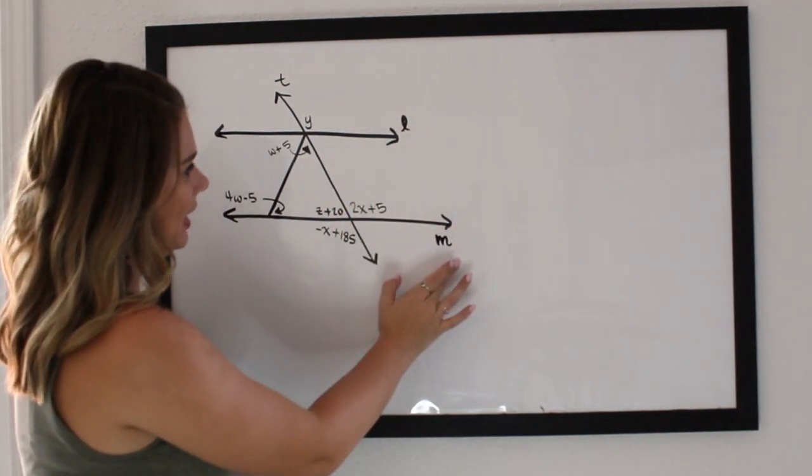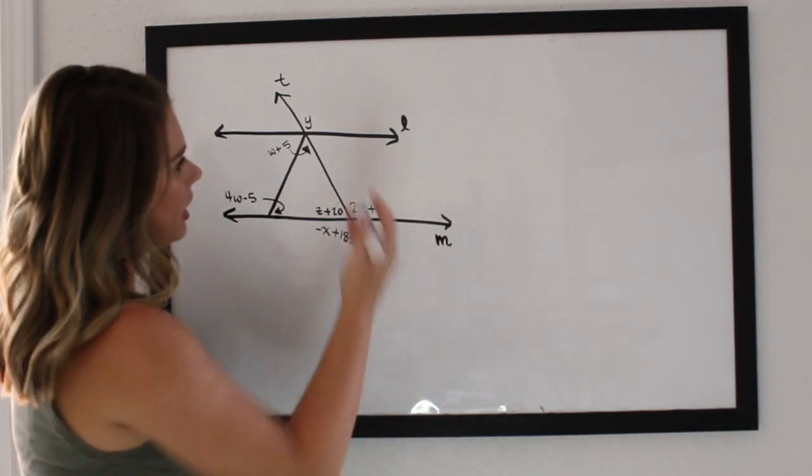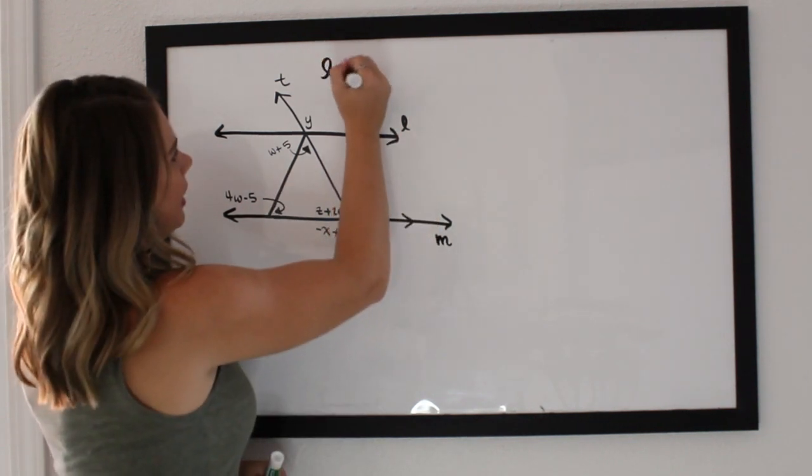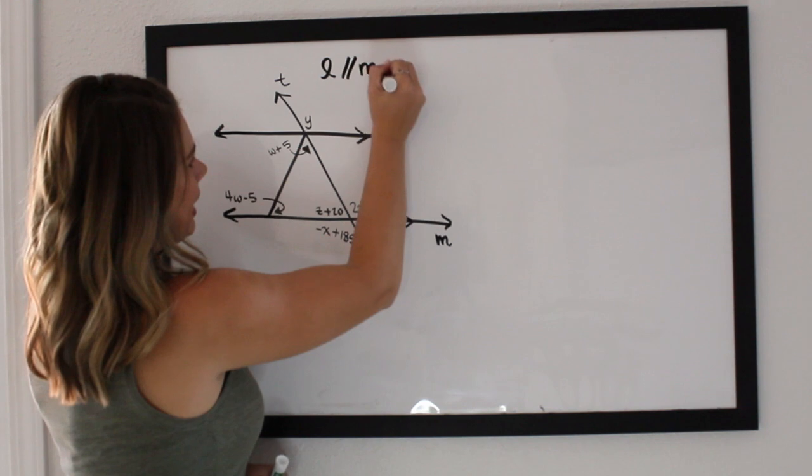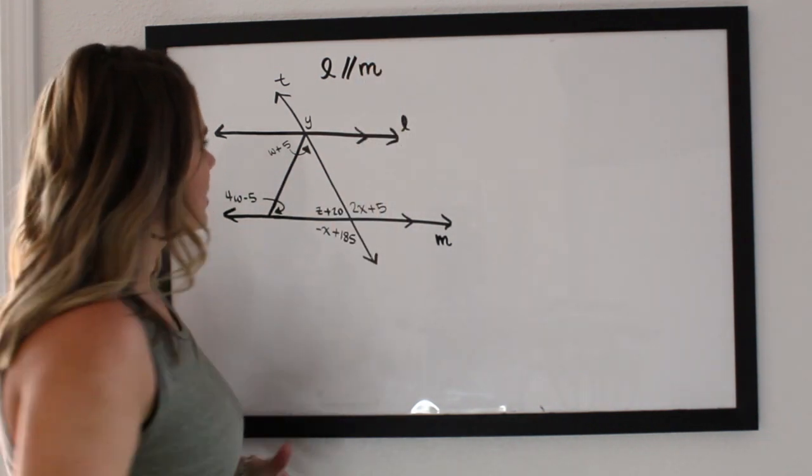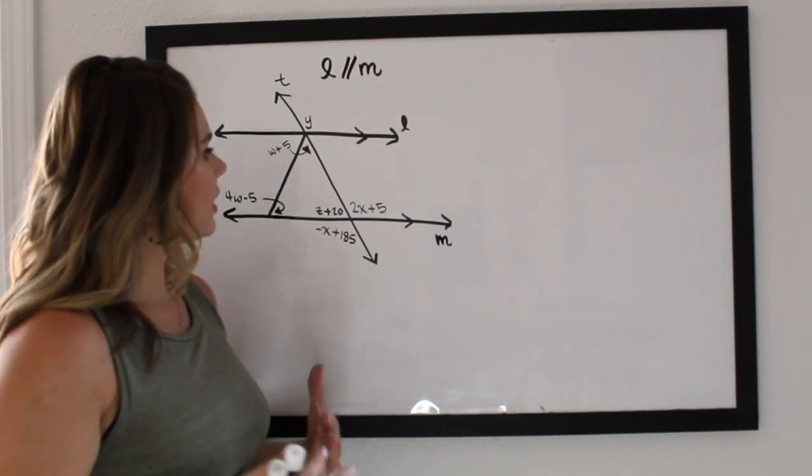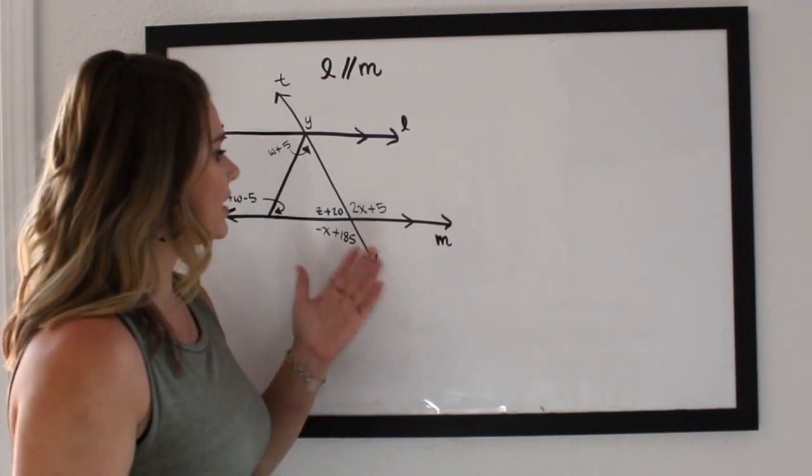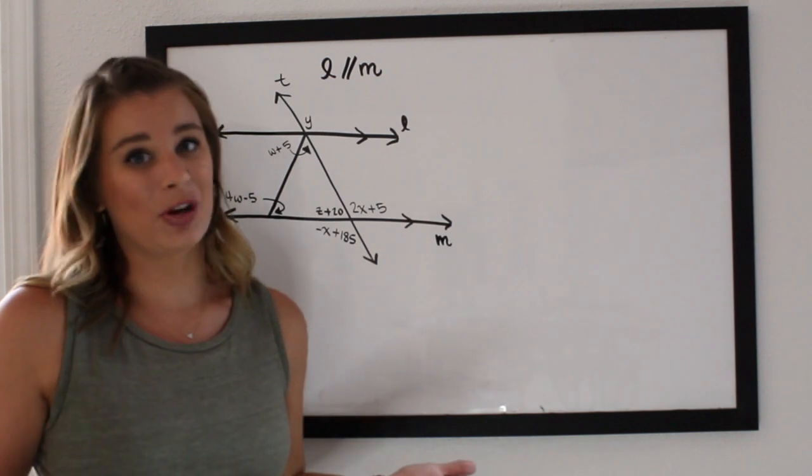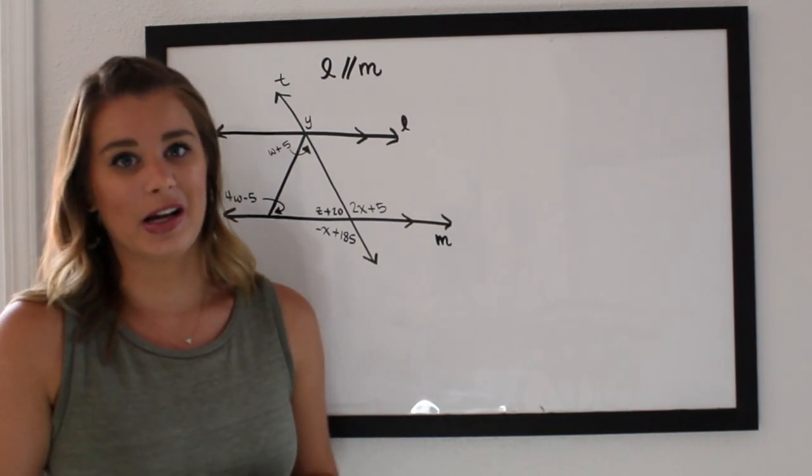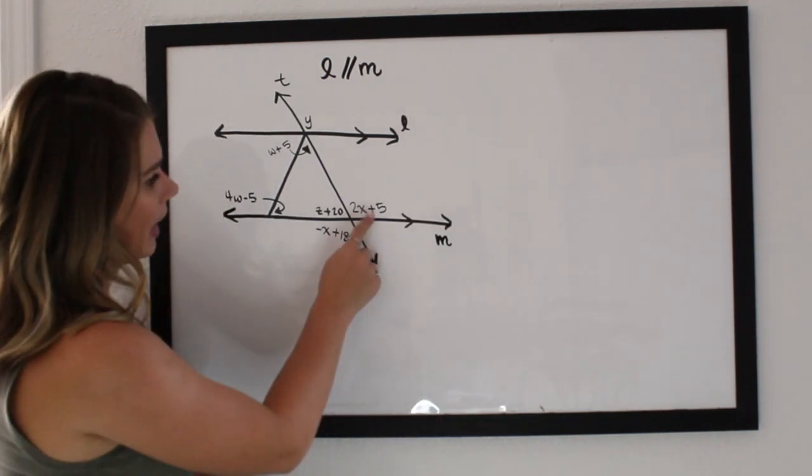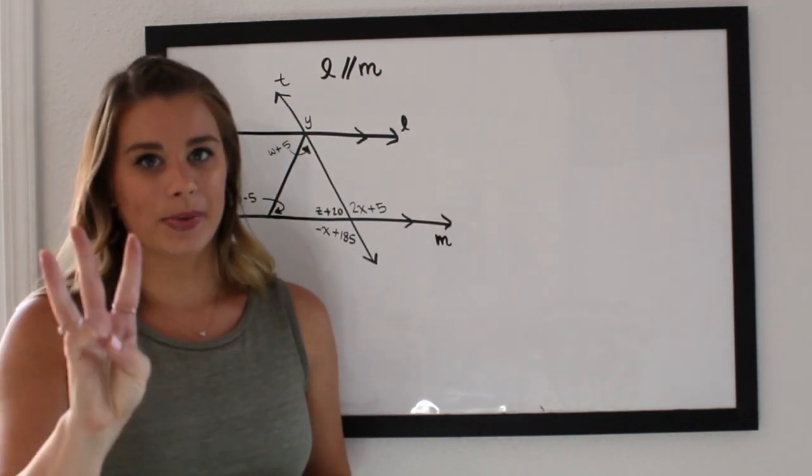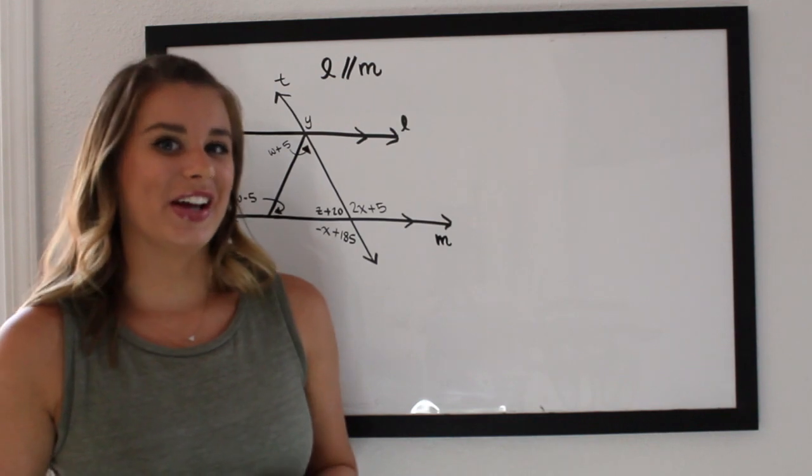For this problem, I have line L and I have line M, and we are going to assume or we're going to be given that line L is parallel to line M. We are going to be using our angle relationships to set up equations and solve for the missing variables. So we need to solve for x, y, and z. We have three variables, which means we need to set up three different equations using our angle relationships.